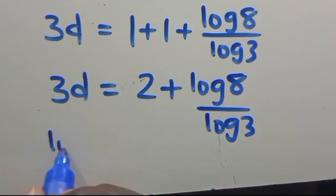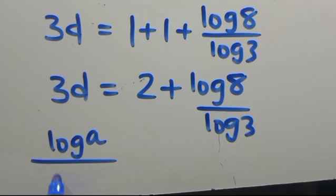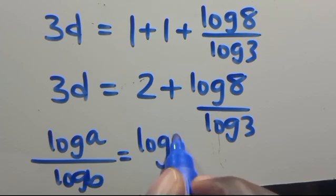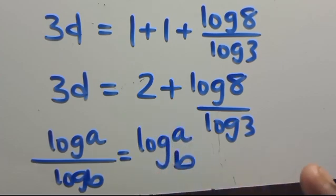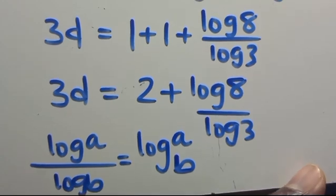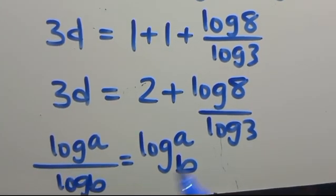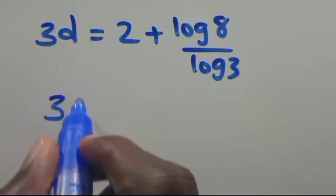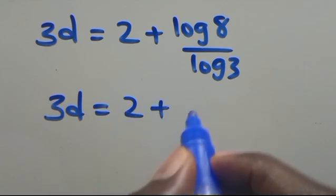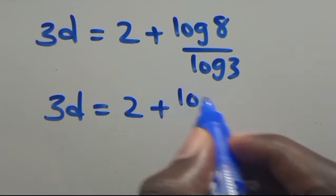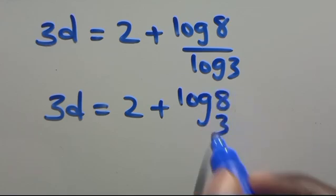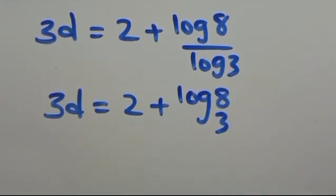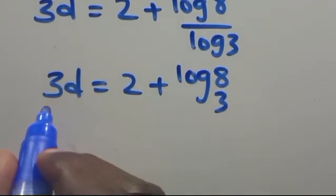Recalling that log A over log B equals log A in base B, so log 8 over log 3 equals log 8 base 3. Therefore, from here we have 3D equals 2 plus log 8 in base 3, and dividing through by 3 gives us the value of D.